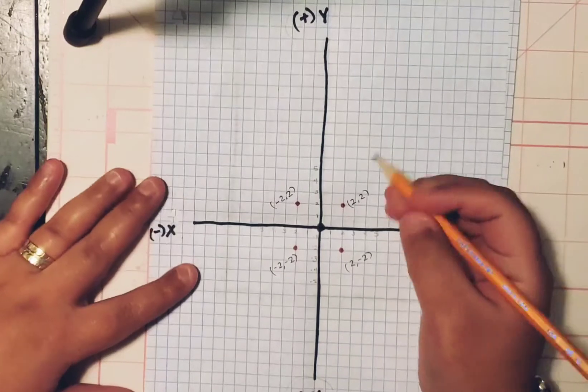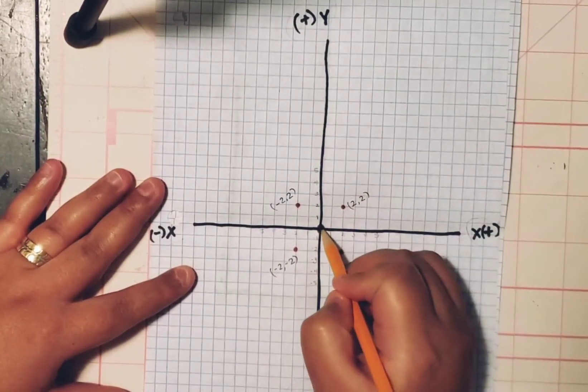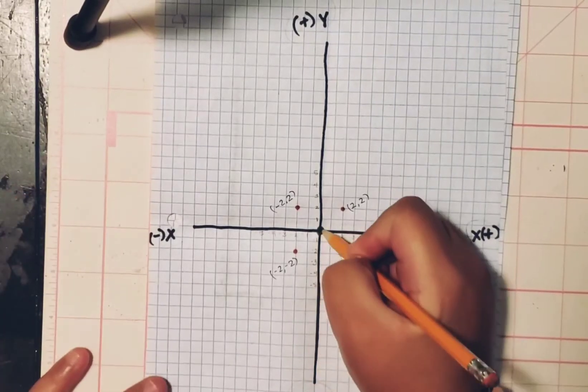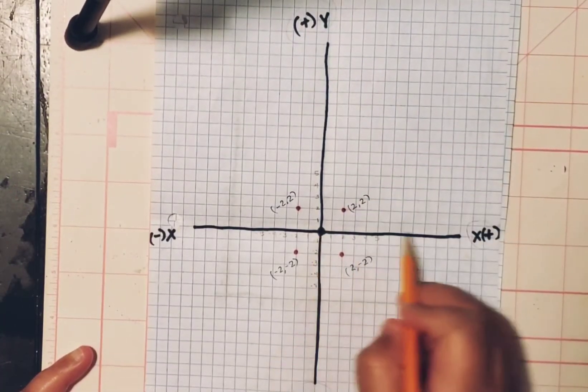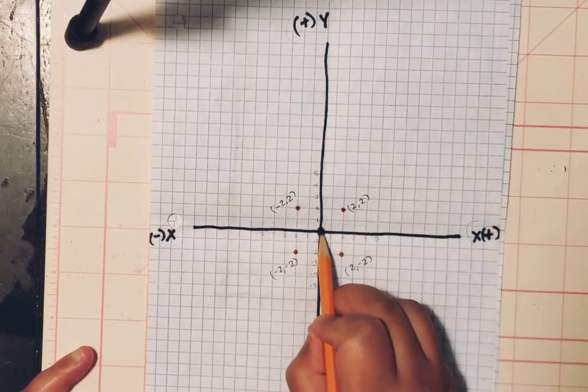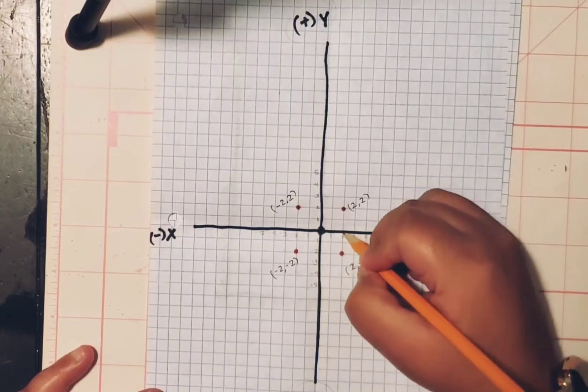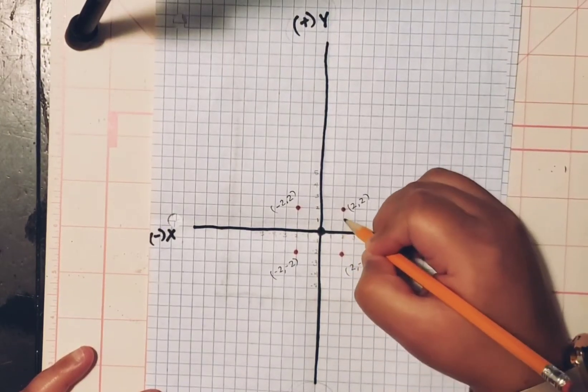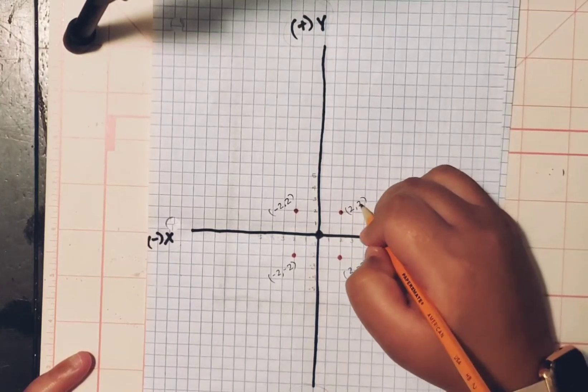So this graph right here, you always start on your zero, right in the middle. For instance, we're going to plot this point right here. We will start always on your X line. We move one, two, two lines, and then we go up to one, two. So it's a positive two to a positive two.